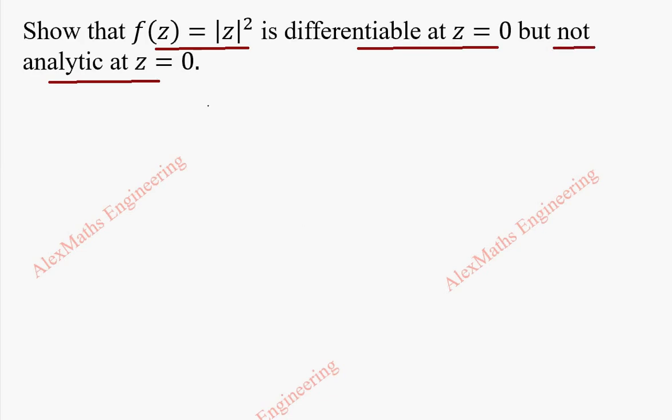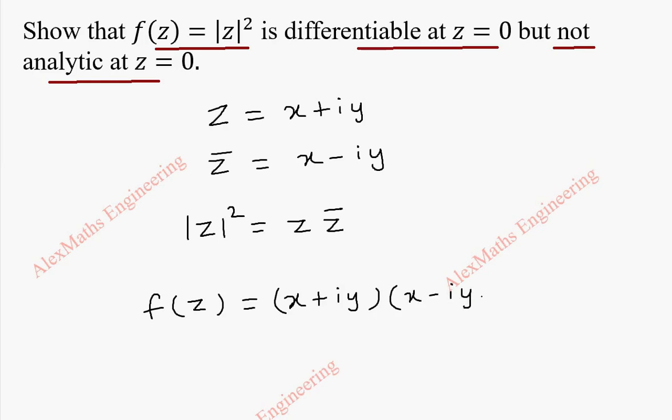We are going to take z as x + iy and z̄ will be its conjugate x - iy. We have a formula |z|² = z·z̄. So f(z) will become (x + iy)(x - iy) which is of the form a² - b². Since i² is -1 it becomes x² + y². So this is our f(z).